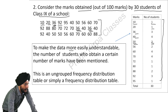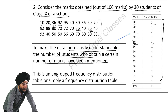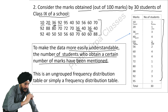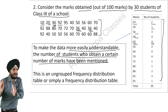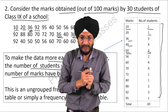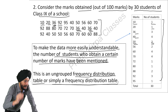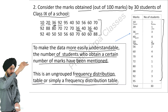The number of students who obtained a certain number of marks have been mentioned in the table. This is an ungrouped frequency distribution table, because we have mentioned only the marks and the number of students who obtained those relevant marks — not grouped into ranges like 0–20, 20–40, 40–60. This is simply a frequency distribution table, and it may become very large if the number of students is very large.